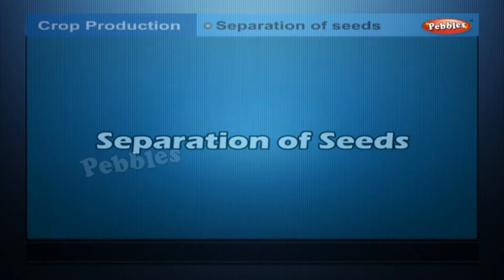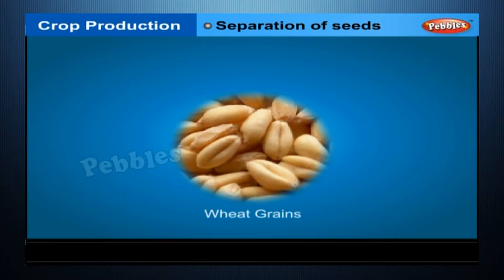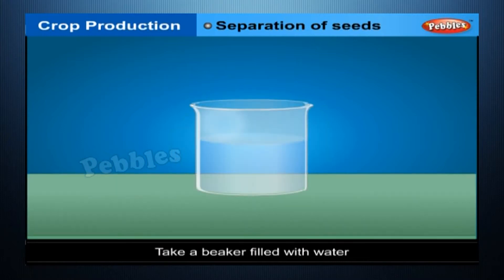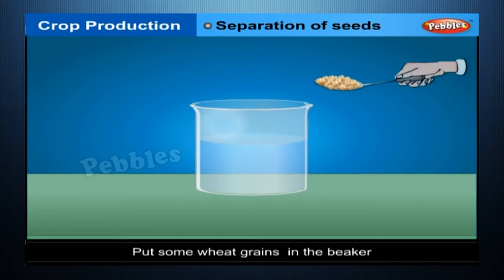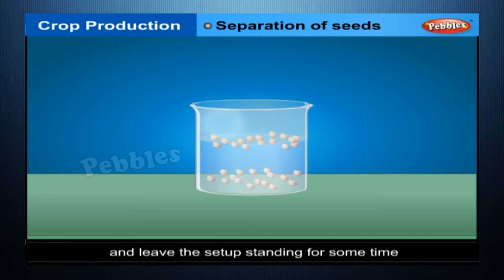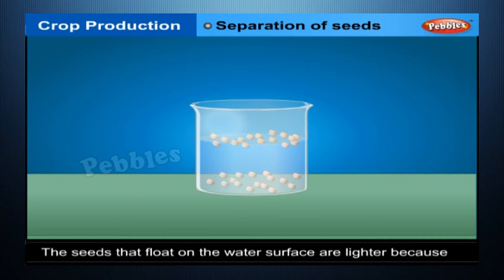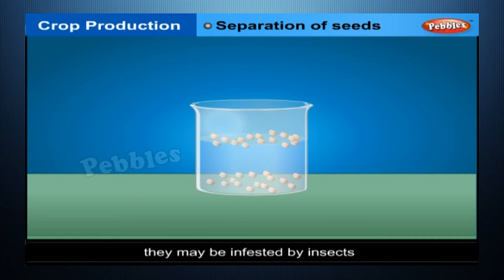Separation of Seeds - Aim: to separate healthy seeds from unhealthy ones. Materials required: a beaker, water and wheat grains. Procedure: take a beaker filled with water. Put some wheat grains in the beaker and leave the setup standing for some time. You will observe that some seeds settle down while some float on the water surface. The seeds that float are lighter because they may be infested by insects. Hence, we should use the ones settled at the bottom.